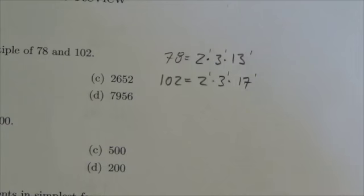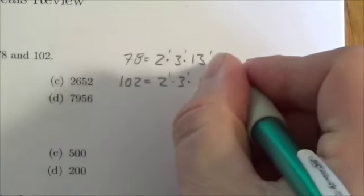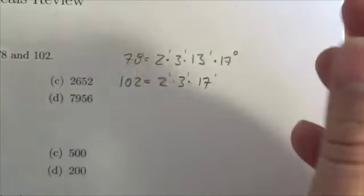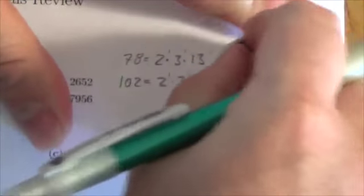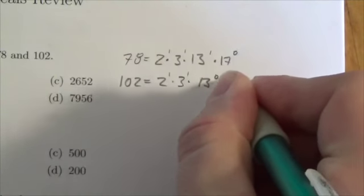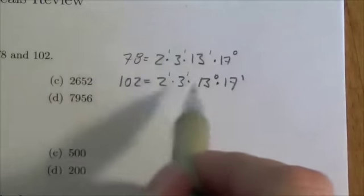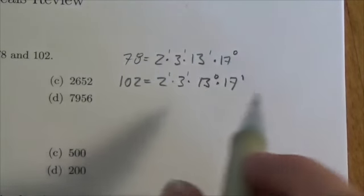What I'm going to do is include 17 to the 0 for 78, and for 102, I'm going to include 13 to the 0 times 17 to the 1. Now each one of these has the factors of the other one in it.